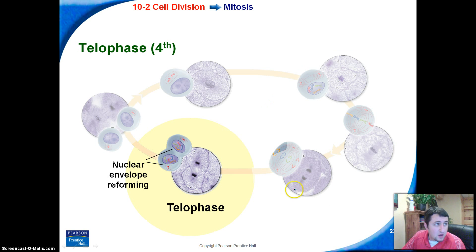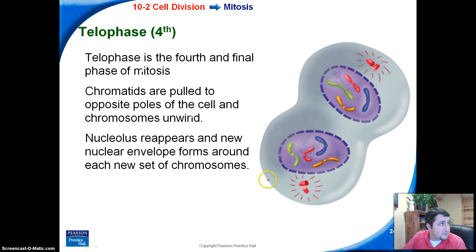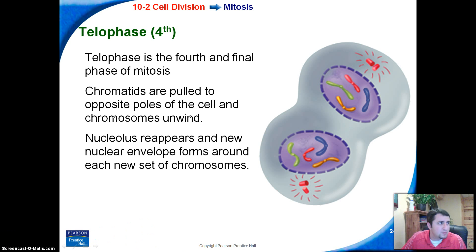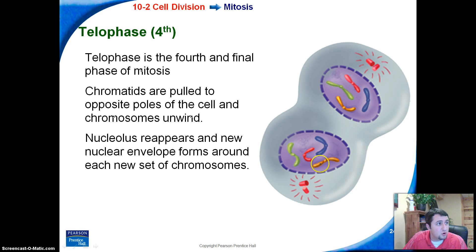Telophase is the fourth and final phase of mitosis. This is basically where we finish up mitosis. Chromatids are pulled to the opposite poles of each cell — you can see that it looks like two cells are beginning to form, each with its own sister chromatid. The nucleolus begins to form again, and the nuclear membrane begins to form around those existing chromosomes.